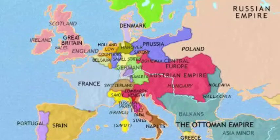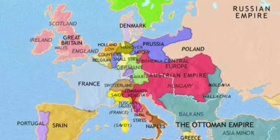Which country is the first industrial country in the world? Great Britain — now called England. England was the first country to industrialize.